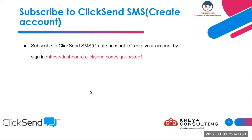Set up your ClickSend account. As a first step, you have to create an account in the ClickSend SMS application. You can follow this link and register for a new ClickSend account. Once your account in ClickSend is set up, you need to install the Connector app in Salesforce from AppExchange.